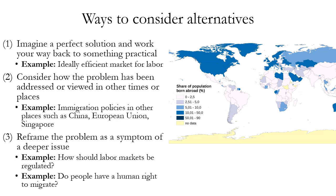So here are some tips for how to consider alternatives. One: imagine a perfect or ideal solution and work your way backward to something more practical or actionable. If you're looking at the issue of immigration from a purely economic lens — there are other lenses and values as well, such as people's rights to migrate — but from an economic perspective, you might ask what would our labor market look like if it were ideally efficient or competitive. Then consider what immigration policy that suggests — is it something you're currently considering, or is it another position you had not yet considered?